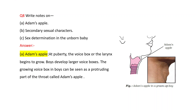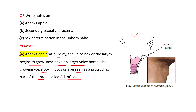Write short notes on Adam's apple, secondary sexual characters, and sex determination in the unborn baby. Adam's apple: at puberty, the voice box or the larynx begins to grow. Boys develop larger voice boxes. The growing voice box in boys can be seen as a protruding part of the throat, which is called Adam's apple. Also draw a diagram indicating this protruding part as Adam's apple.